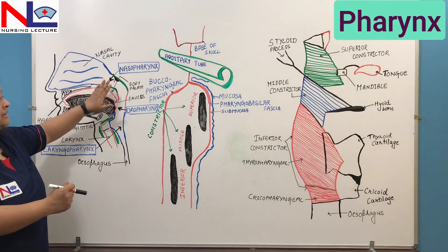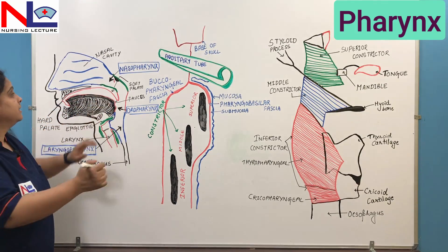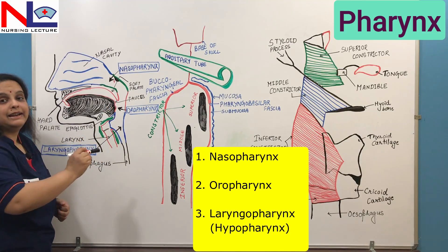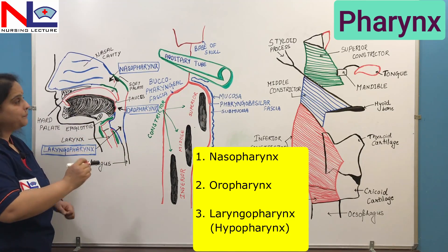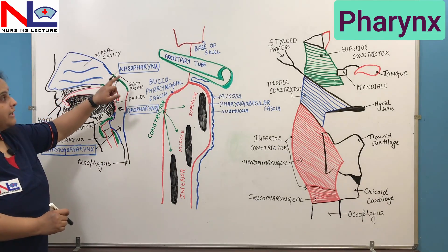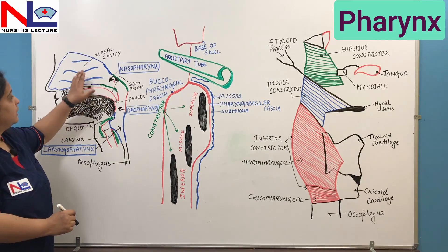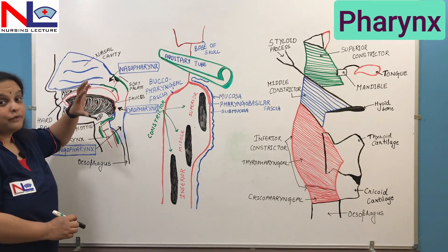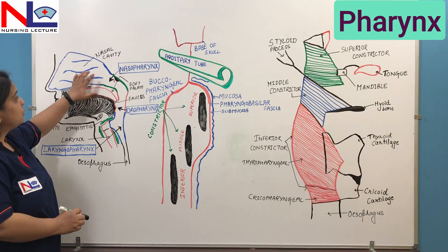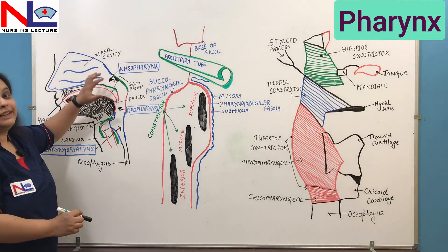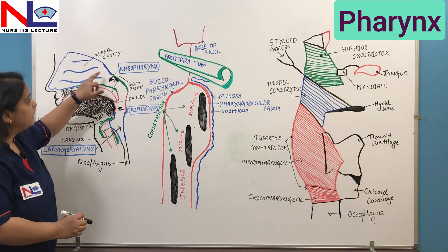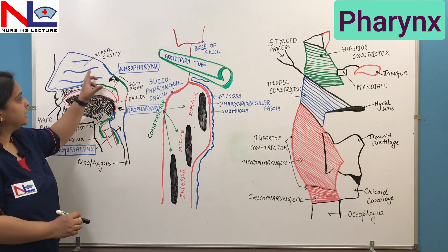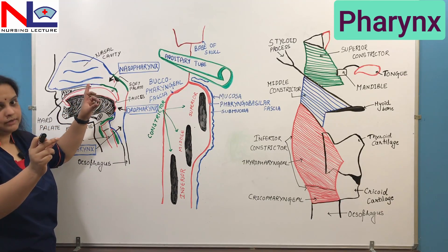There are three parts of the pharynx: nasopharynx, oropharynx, and laryngopharynx. The nasopharynx is named so because the nasal cavity — which forms part of the respiratory system — has its internal nares opening into this nasopharyngeal part.